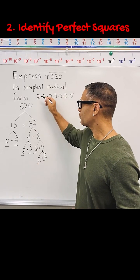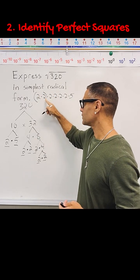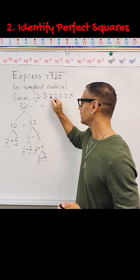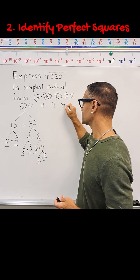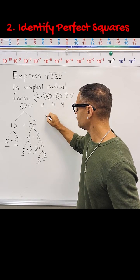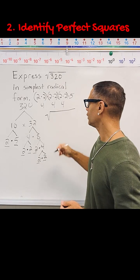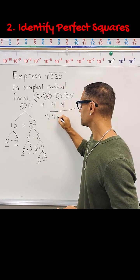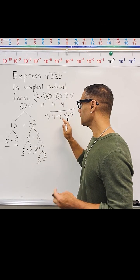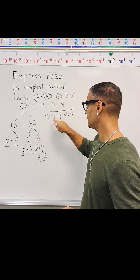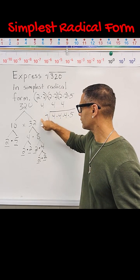So if we use parentheses to group pairs of numbers, it also makes perfect squares. 2 times 2 is 4, which is a perfect square. 2 times 2 is 4, which is a perfect square. And 2 times 2 is 4, which is another perfect square. So what we're going to do next is rewrite our square root sign and write our factors as 4 times 4 times 4 times 5.